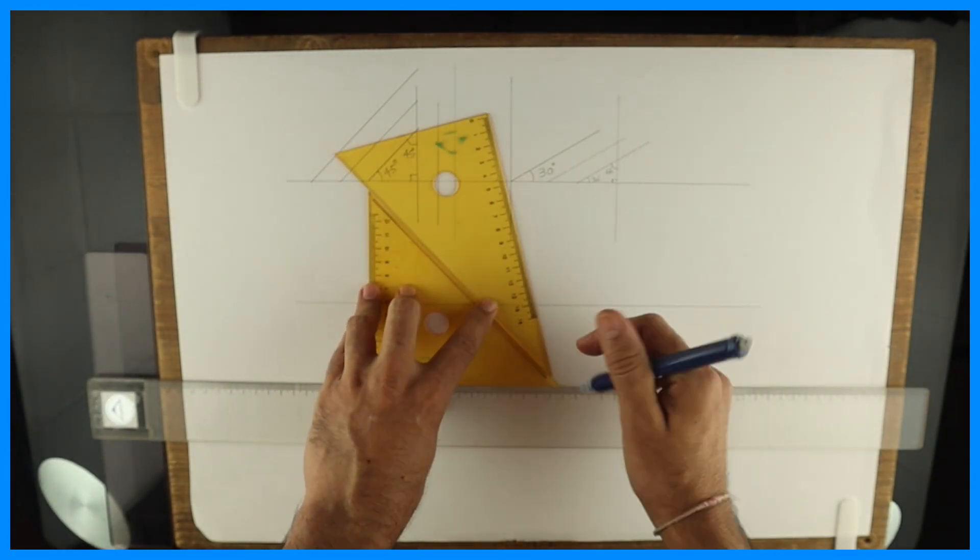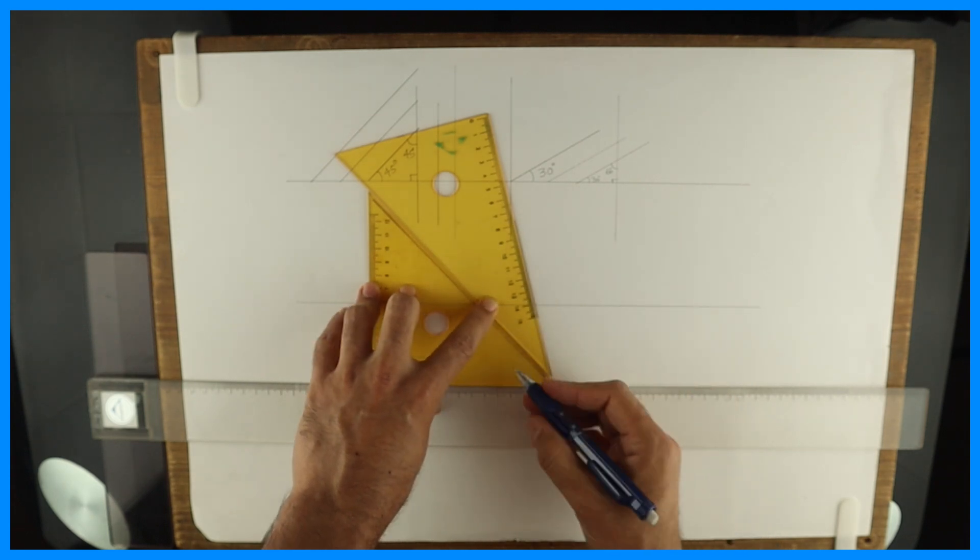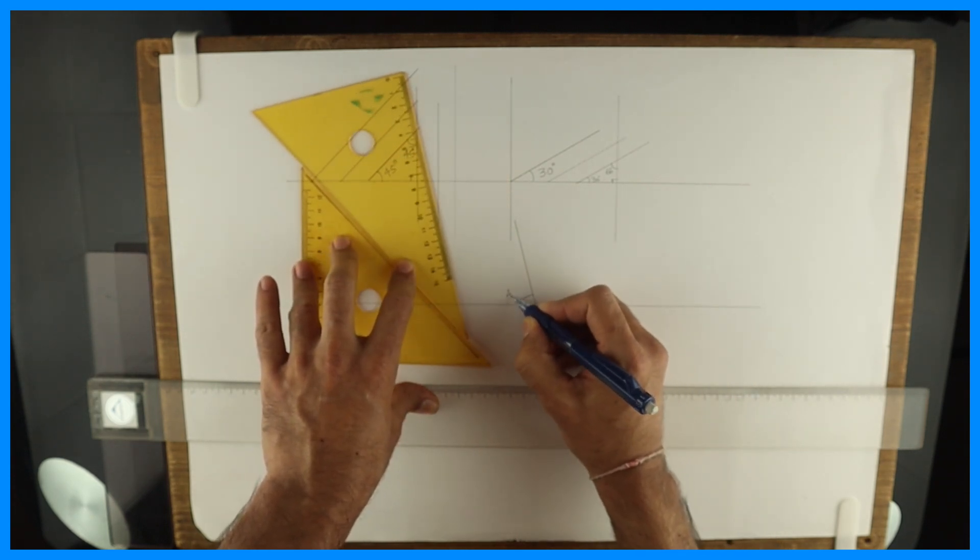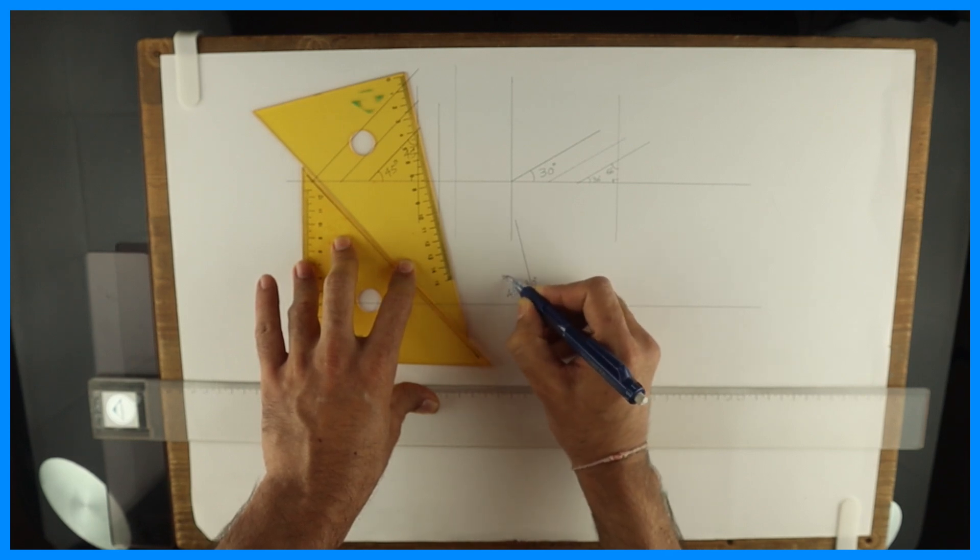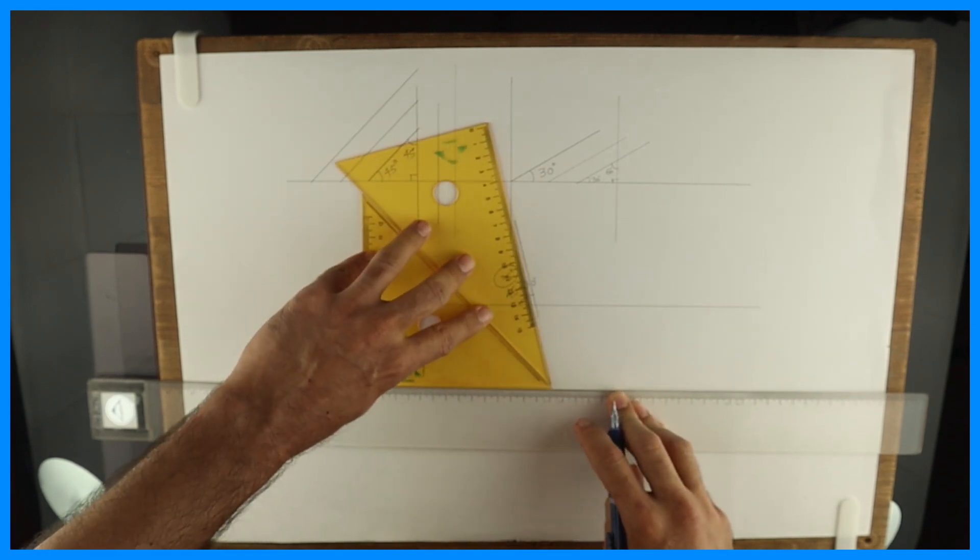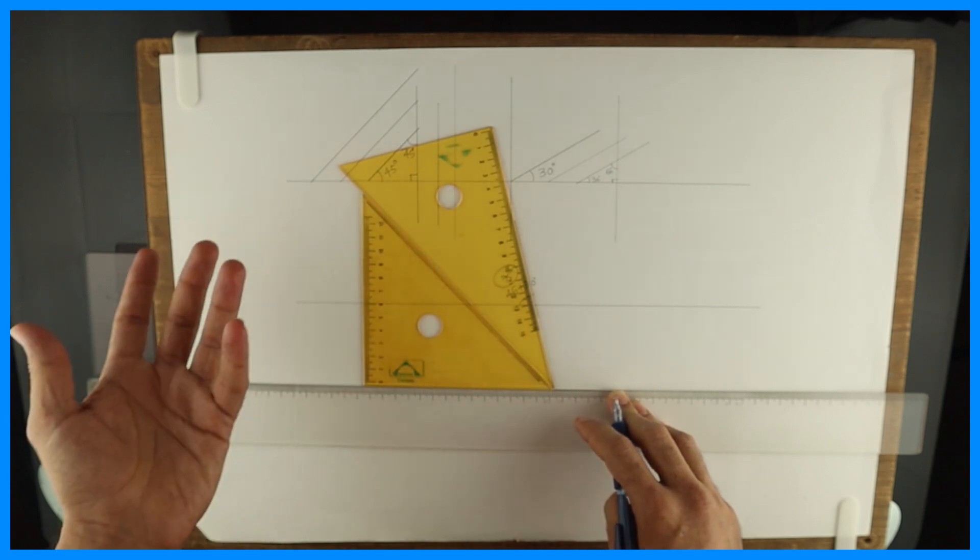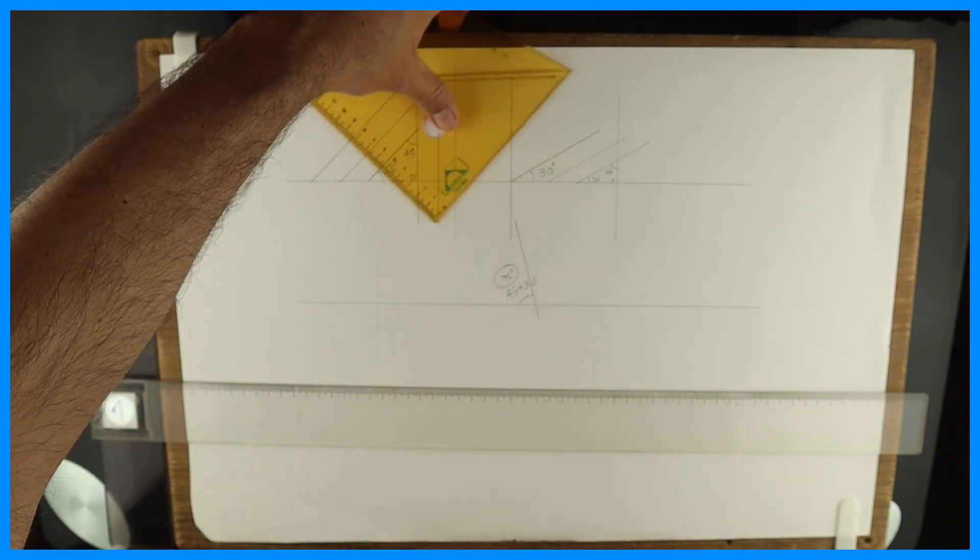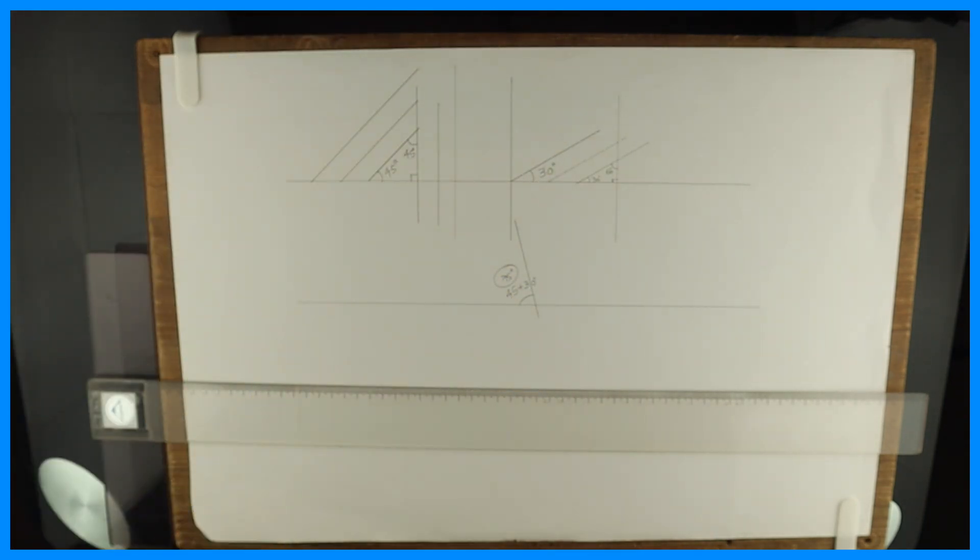And if we use both we can draw many angles. Let's say this is 75 - 45 plus 30. So that way you can draw any angle with multiples of 15 to 360. You can draw it with set square. So that you can do it for practice.